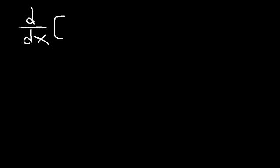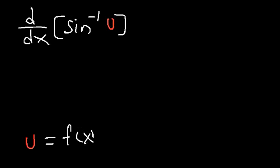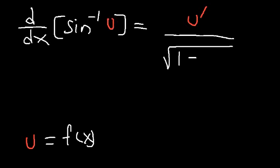In this video, we're going to go over the derivatives of inverse trig functions. Let's start with inverse sine. The derivative of the inverse sine function — let's say inverse sine of u, where u is a function of x — the derivative is going to be u prime divided by the square root of 1 minus u squared.